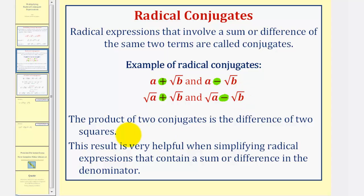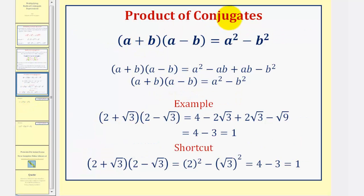The product of two conjugates is the difference of two squares. This result is very helpful when simplifying radical expressions that contain a sum or difference in the denominator. There is a shortcut: the product of conjugates A plus B and A minus B equals A squared minus B squared. This formula should look familiar — it is the same formula used to factor a difference of squares.